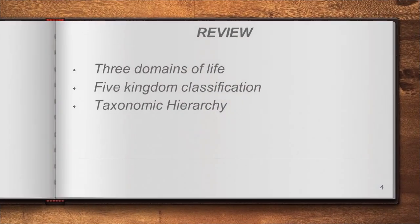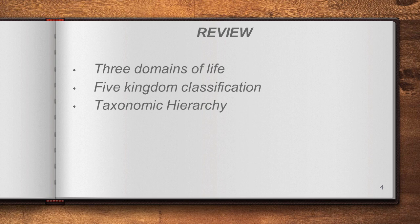Before we move to today's topic, let us do a review of the previous class. We discussed three objectives: three domains of life, five kingdom classification, and taxonomy hierarchy. As per the three domains of life, the entire organisms are classified as Archaea, Bacteria, and Eukarya. Archaea includes extremophiles — bacteria living in extreme climatic conditions. The third domain, Eukarya, includes Protista, Fungi, Plantae, and Animalia.